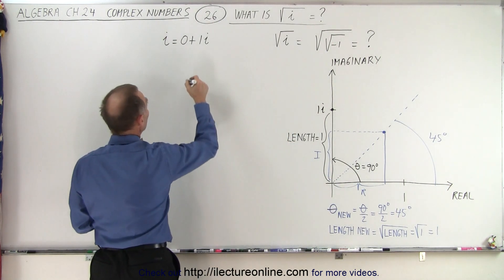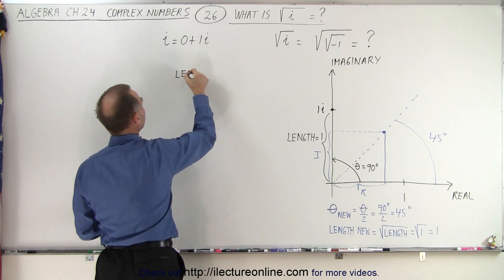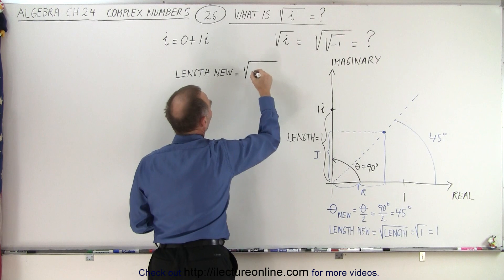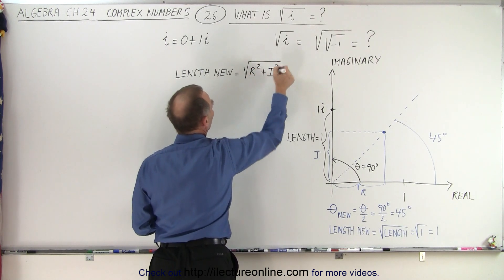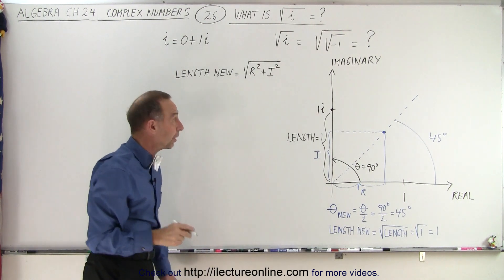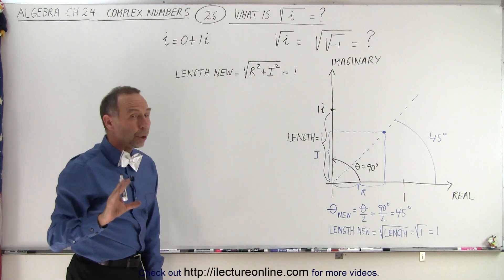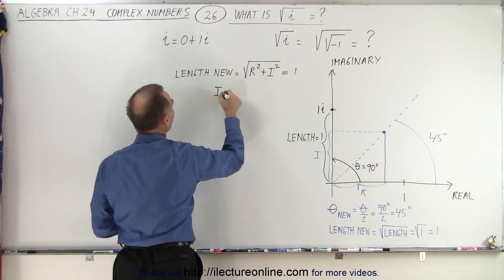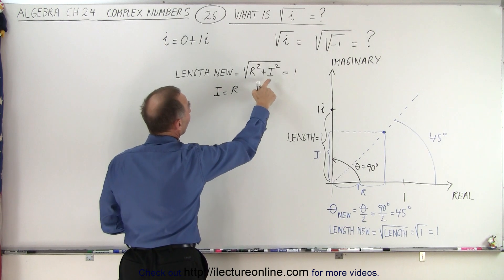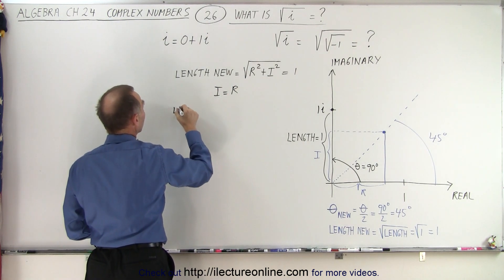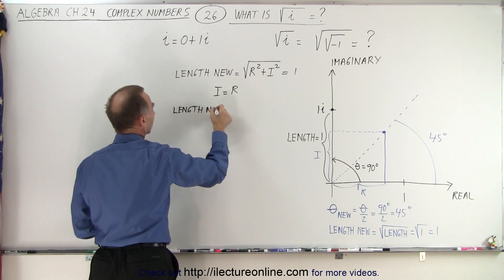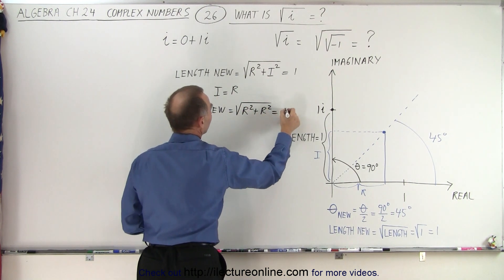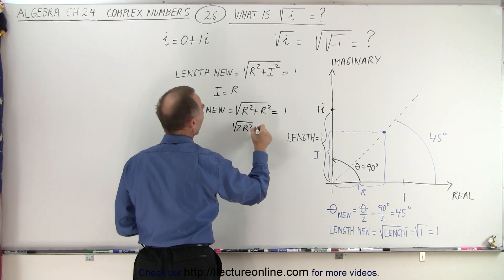Notice that we know that the new length will be equal to the square root of the real part squared plus the length of the imaginary part squared. These are the length of the real part and the length of the imaginary part, and we know that must be equal to 1. And we also know, since that's on a 45 degree angle, that these parts must be the same. We know that i must equal r, which means we can replace i by r, so the new length is equal to the square root of r squared plus r squared, and we know that's equal to 1. So that means that the square root of 2r squared must equal 1.